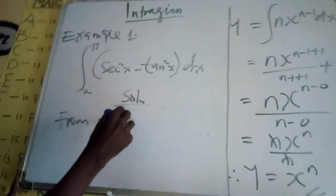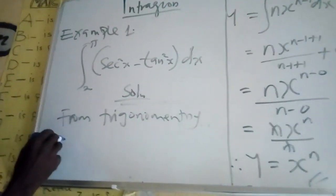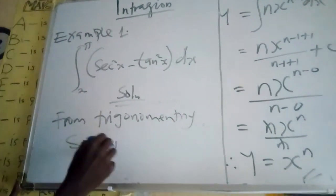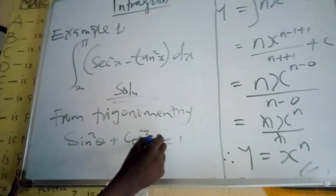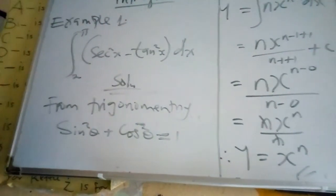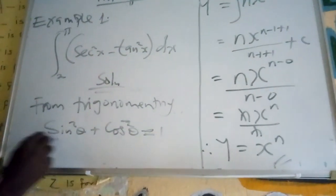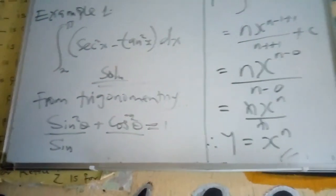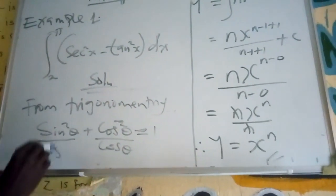From trigonometry, we have a Pythagorean identity: sin square theta plus cos square theta equals to 1. Divide both sides by cos theta — cos square — indictive.